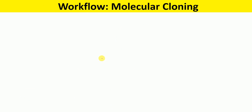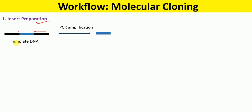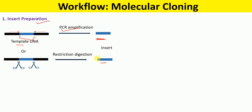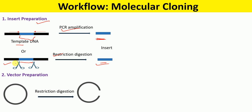The first step involved in the molecular cloning process is insert preparation. We can prepare the insert from the template DNA by using PCR amplification with primers specific for our target sequence, and finally we will have our desired insert. The insert can also be prepared by using suitable restriction enzymes — we cut out our desired sequence from the template DNA and finally we get our desired insert.